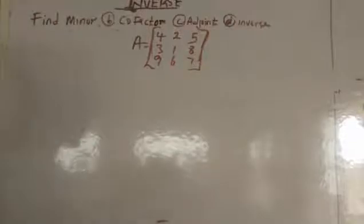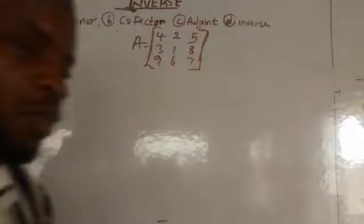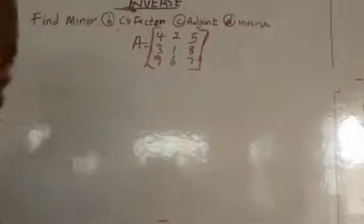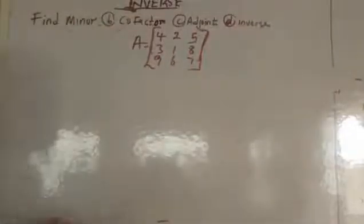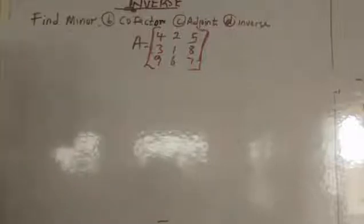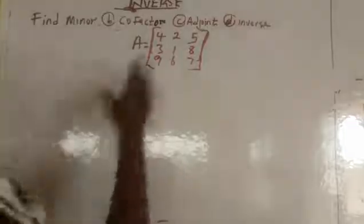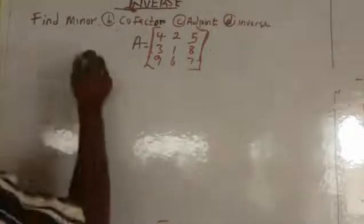How can you find the minor? If you want to find the minor, it's very simple. What you just have to do is delete the row and the column of that element. The remaining elements you have in the matrix — that is your minor. Let's quickly find the minor now.